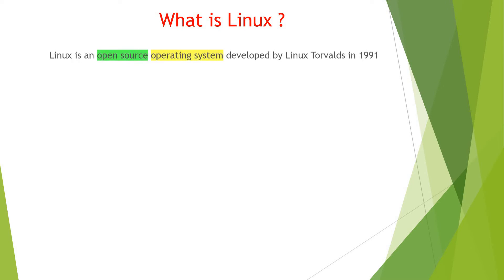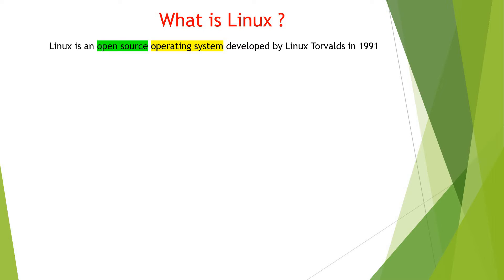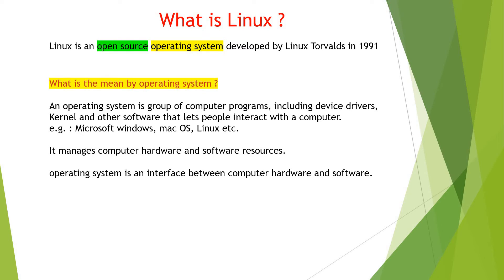Now first of all, what is Linux? Linux is an open source operating system developed by Linus Torvalds in 1991. An operating system is a group of computer programs including device drivers, kernel, and other software that let people interact with the computer. For example, Microsoft Windows is an operating system, Mac OS is an operating system, and Linux is also an operating system. Windows and Mac OS are closed source operating systems, while Linux is an open source operating system. It manages computer hardware and software resources.